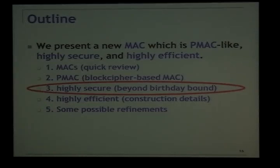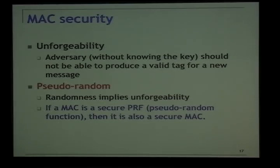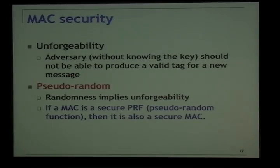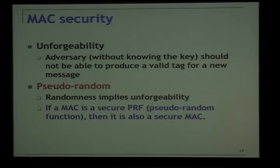When we talk about security of MACs, we usually use the notion of unforgeability — an adversary without knowing the key should not be able to produce a valid tag for a new message. There's also a stronger notion: pseudorandomness. Randomness implies unforgeability automatically. If it looks random, you can't predict it, so you can't produce a valid tag. If a MAC construction is a secure pseudorandom function, or PRF, then it's also a secure MAC, and this is the direction we follow in this work.